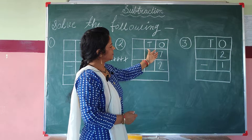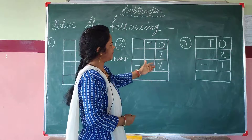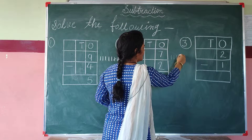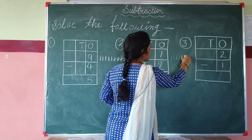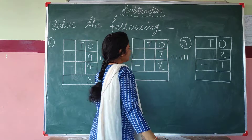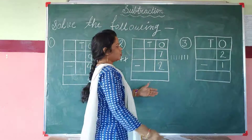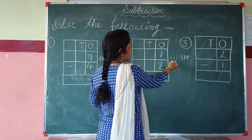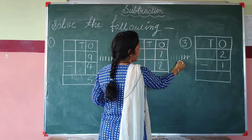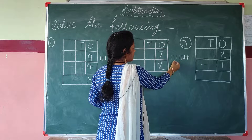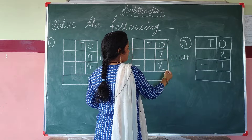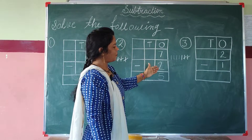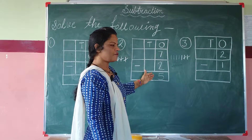Second question: This is number 7. We draw 7 lines: 1, 2, 3, 4, 5, 6, 7. This is number 2. We remove 2 lines: 1, 2. How many lines are there? 1, 2, 3, 4, 5. We write 5 at the 1's place. When we subtract 2 from 7, the answer is 5.